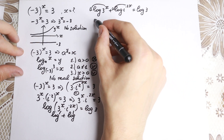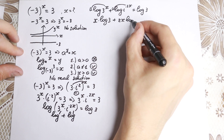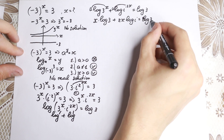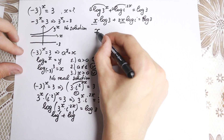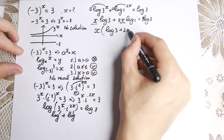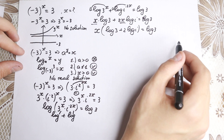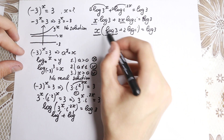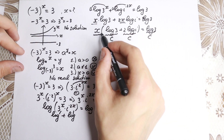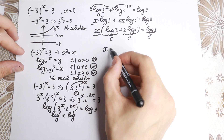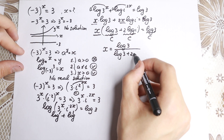Using the power rule for logarithms, the exponents come down in front: x times log 3 plus 2x times log i equals log 3. Now we factor out x, since x appears in both terms: x times (log 3 plus 2 log i) equals log 3. Dividing both sides by the bracketed expression gives us: x equals log 3 over (log 3 plus 2 log i).